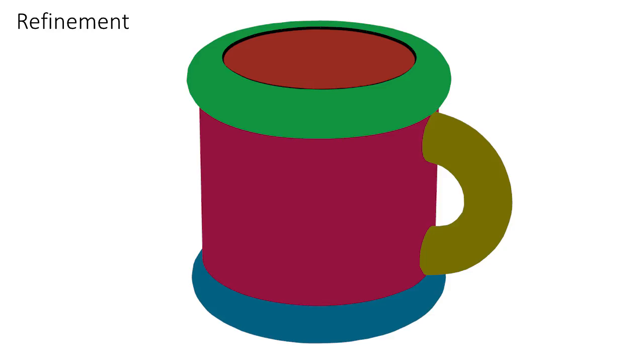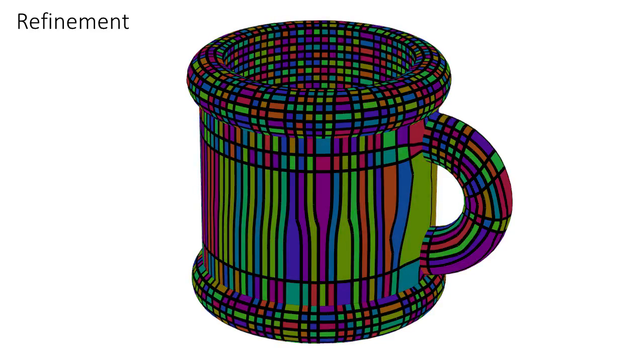We use the extracted flow lines and the model's sharp feature curves to form a projectable network which describes the underlying surface.